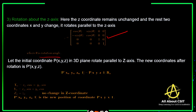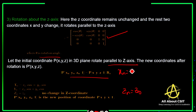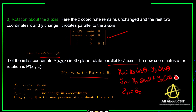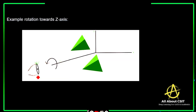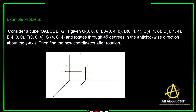For rotation about the Z-axis with initial coordinates P(X, Y, Z), the object rotates parallel to the Z-axis. Zn = Z₀, Xn = X₀·cosθ − Y₀·sinθ, and Yn = X₀·sinθ + Y₀·cosθ. Visually, if you look from this direction, your object is on the Z coordinate side — it rotates parallel to the Z-axis, this way, parallel to Z.